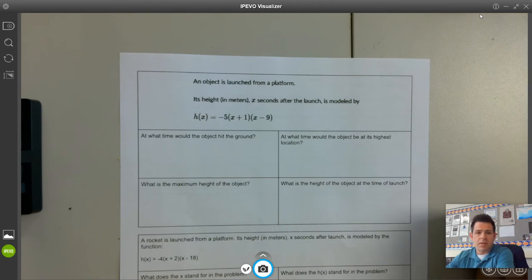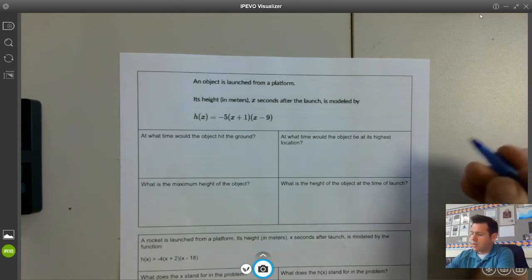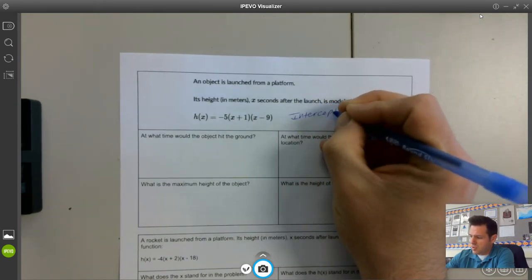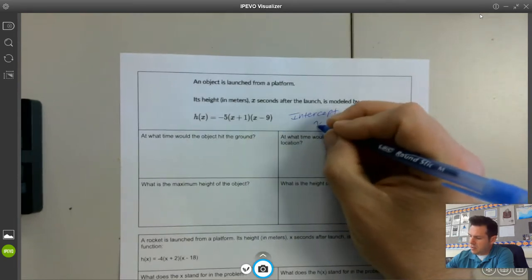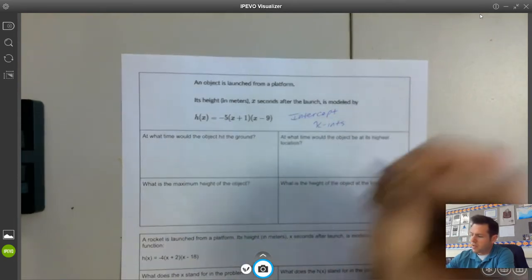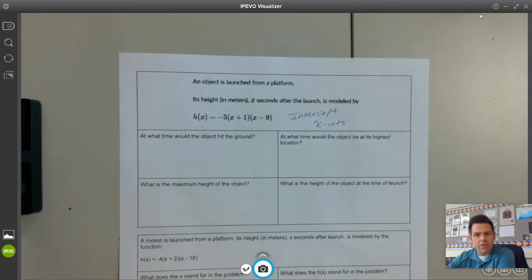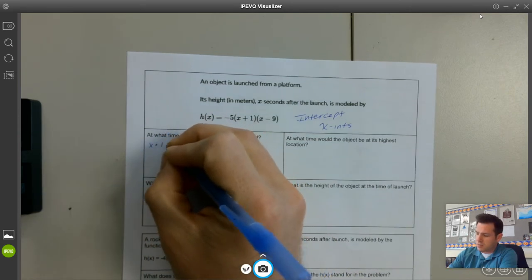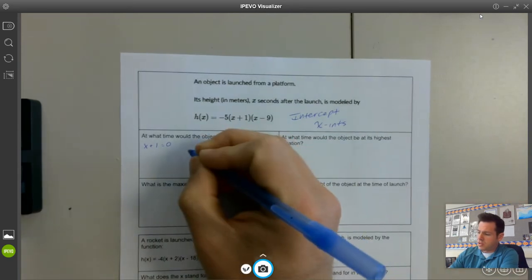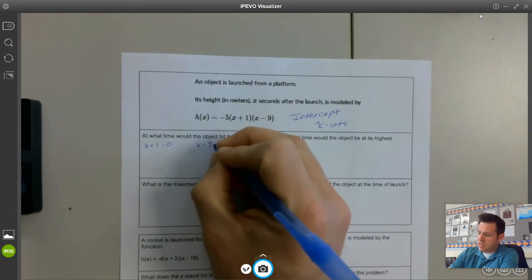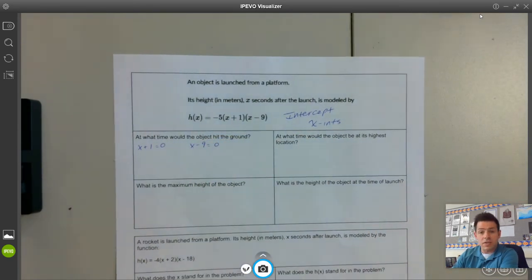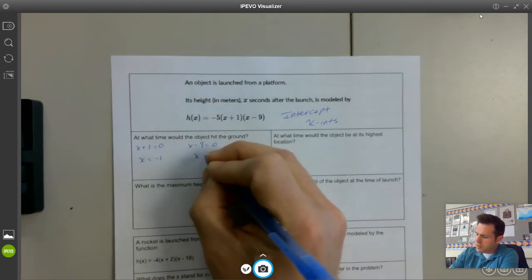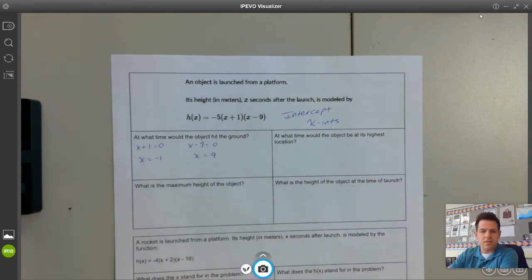The first question says, at what time would the object hit the ground? Because this is intercept form, it's very easy to tell the X intercepts here. This is our zero property that we're doing in the current unit, which means if I take the two intercepts, X plus one is in one parentheses, X minus nine is in the other parentheses, and set them equal to zero and solve, that would give me my two X intercepts.